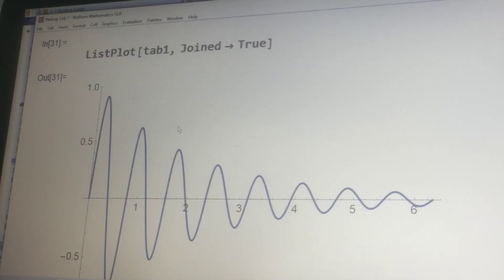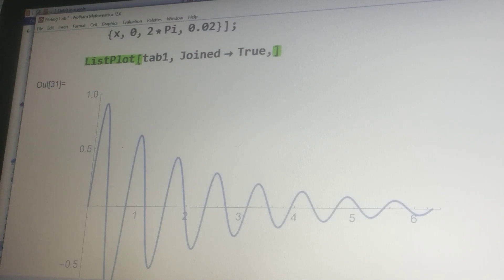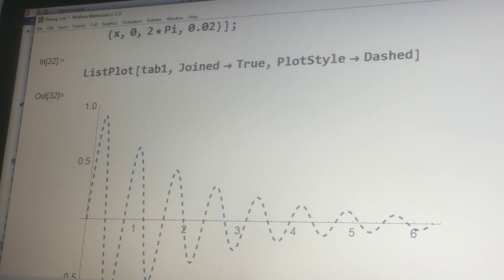So now I want to change the thickness or the style of the plot. I can do that by just adding another command, and that is PlotStyle. If I add PlotStyle and set this to Dashed, it will become a dashed curve. Similarly, you can have the choice of making it a dotted curve.